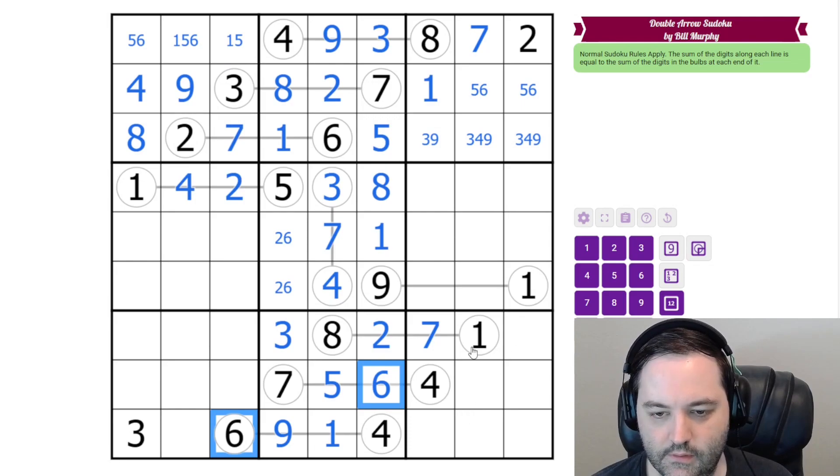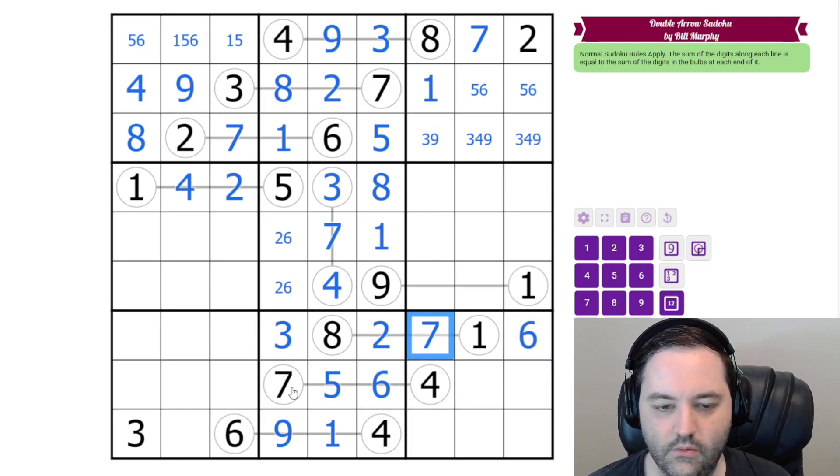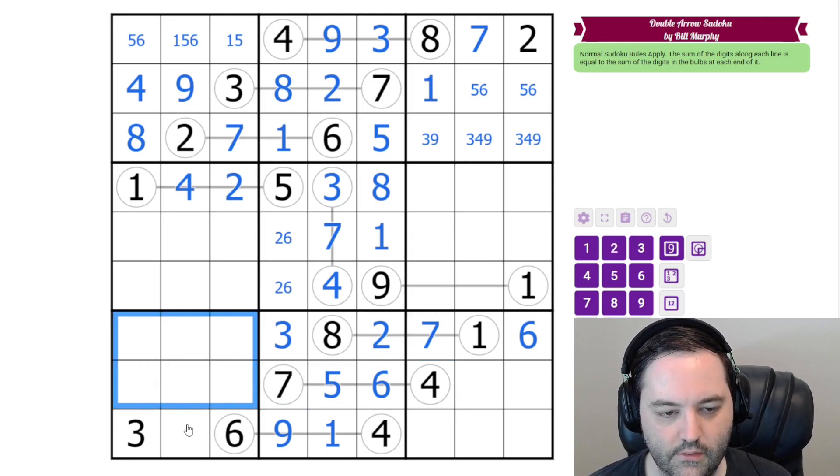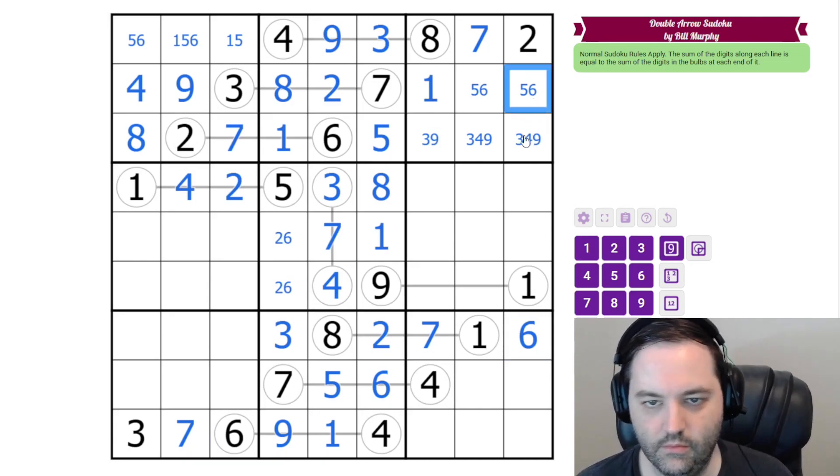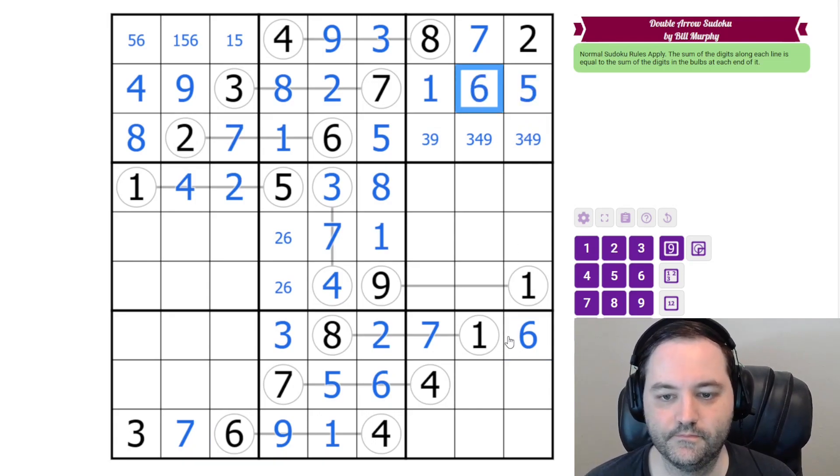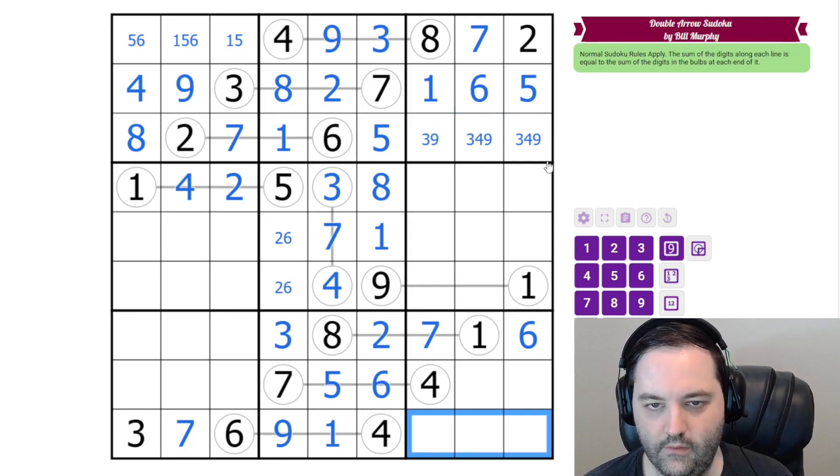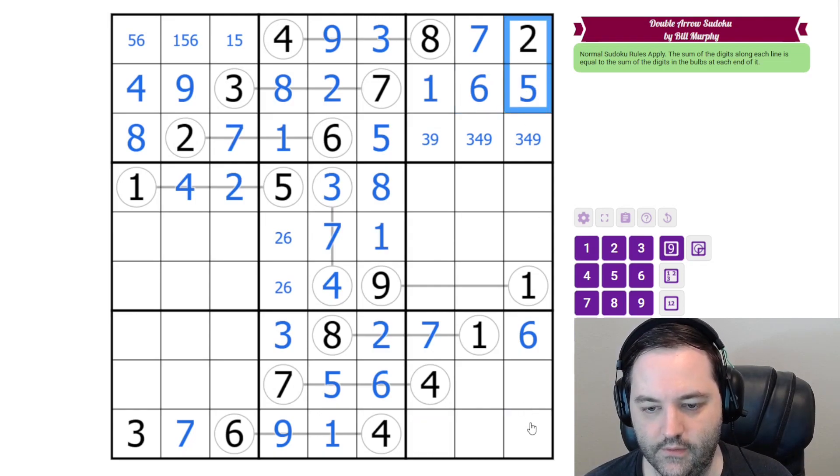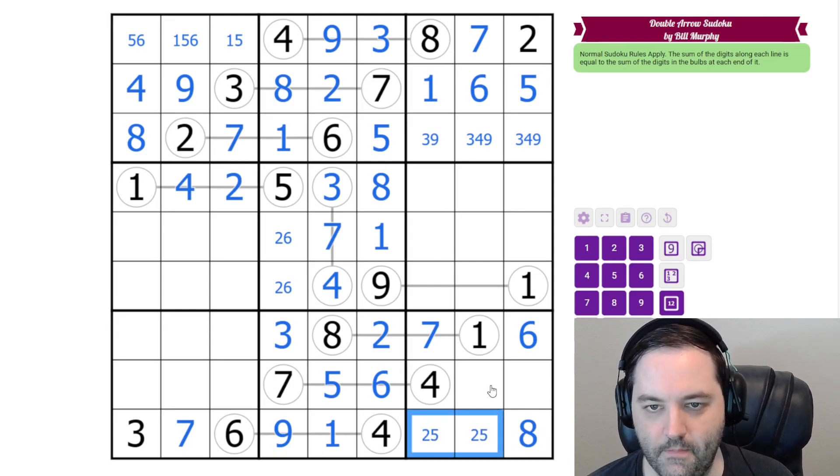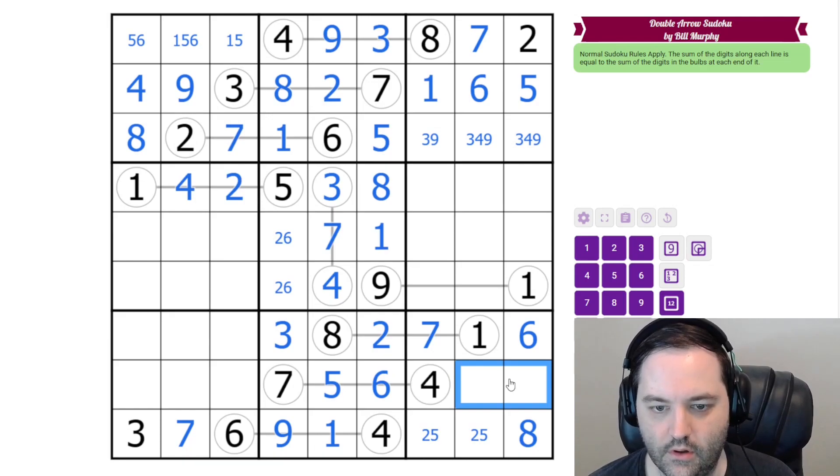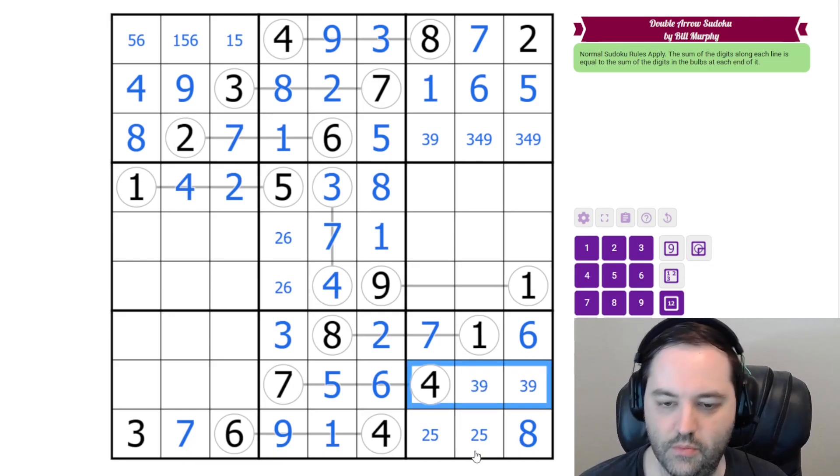Down here, we have 6s looking in this box. So this is 6. We have 7s looking in this box. This is 7. The 6 here resolves 5, 6. Here we have 2, 5, 8. And we have 2 and 5 at the top. So this is our 8. These are 3 and 9 in the box.